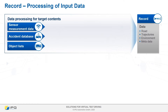I would like to pick out a few examples and illustrate differences in data processing. Basically, we are always concerned with using information to create the necessary elements of road, trajectories and environment. In addition, we need metadata such as the dimensions and class of an object.